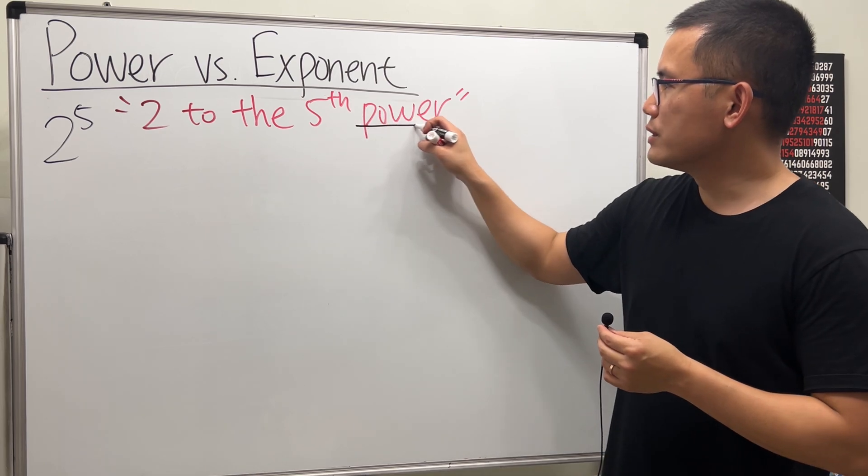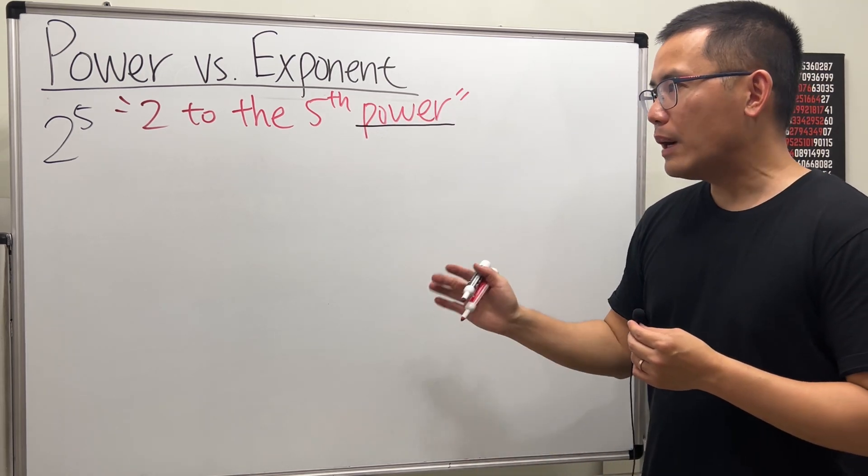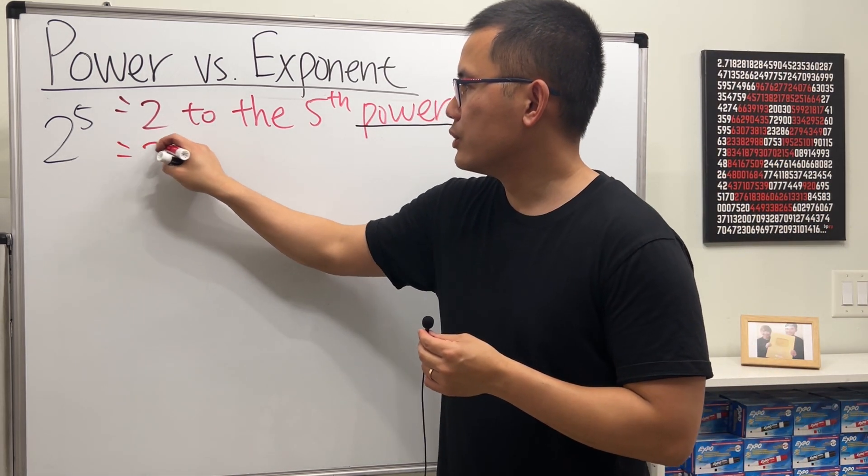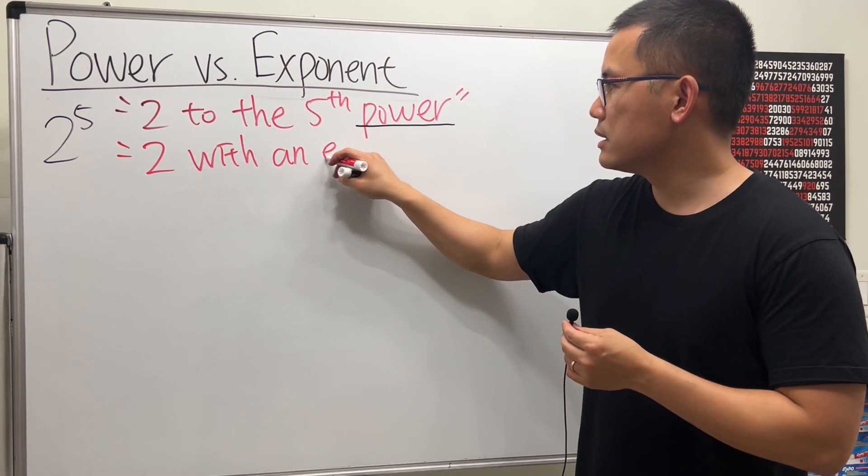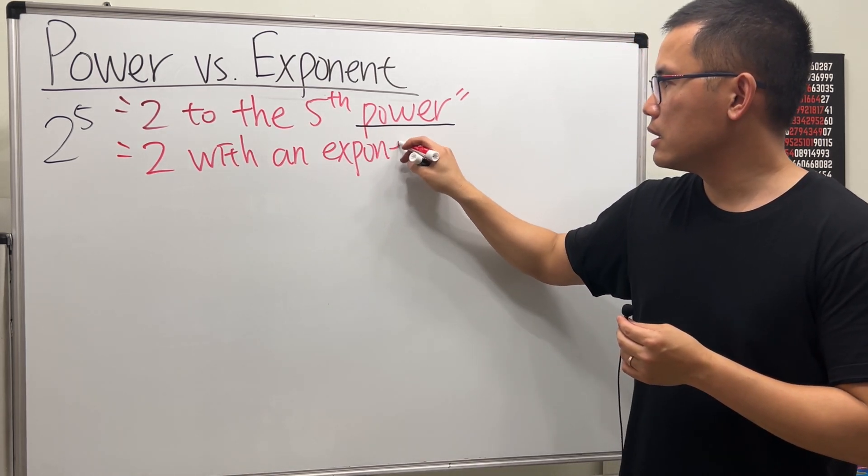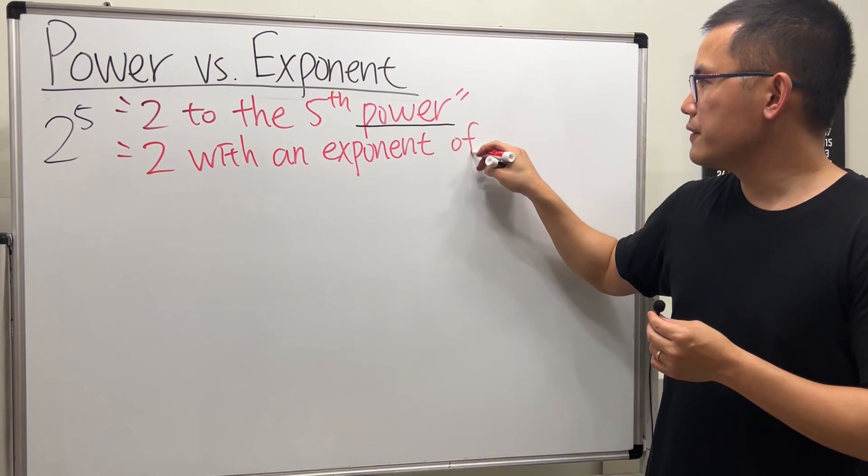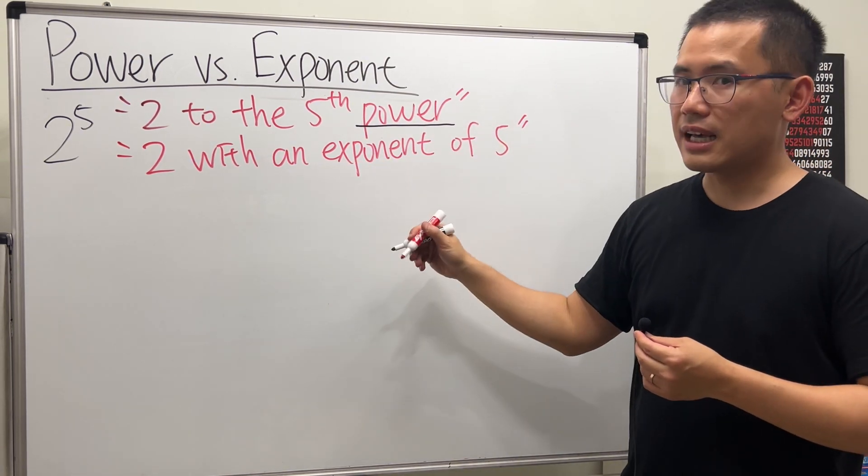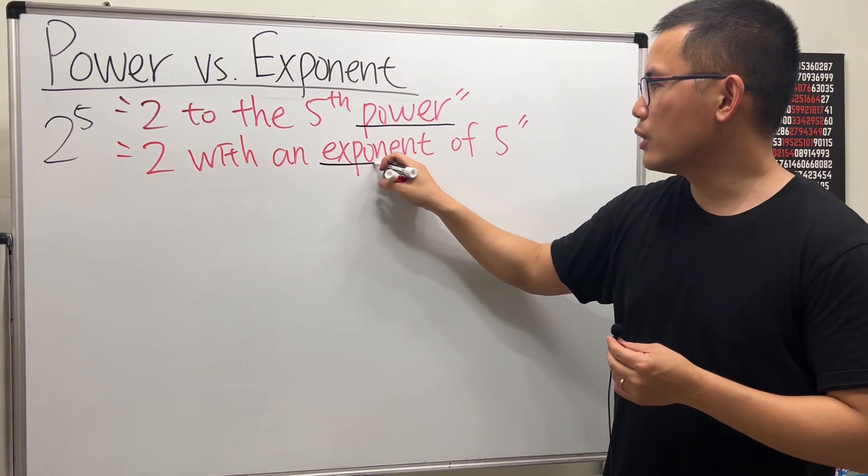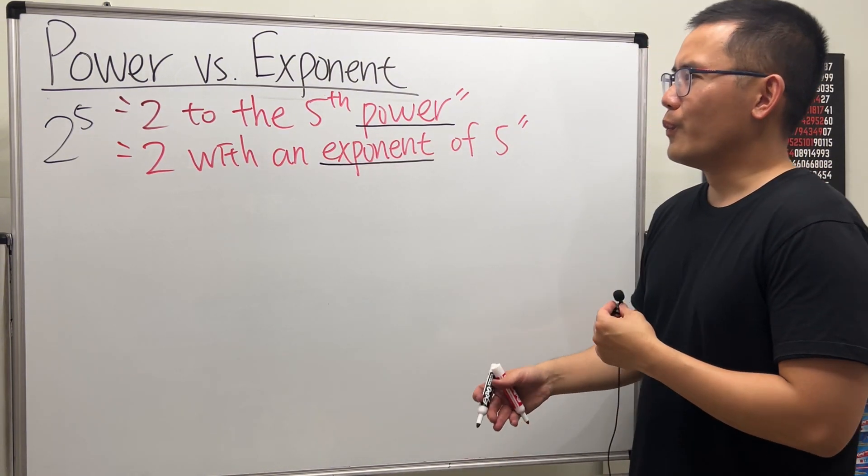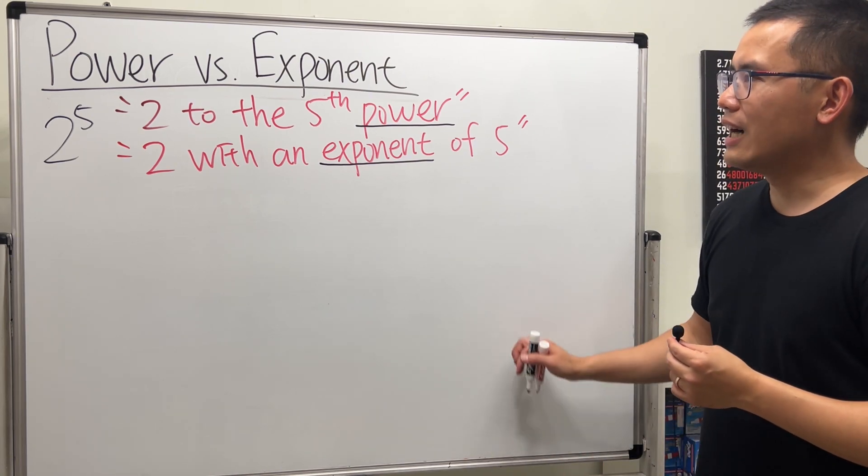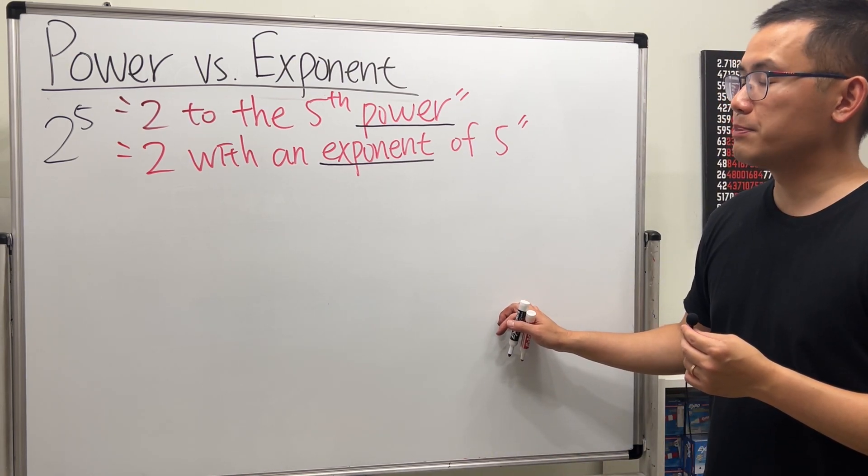And here, we are using the word power. But we can also say this as 2 with an exponent of 5. Although this right here is less common, but we can also use the term exponent. So, what's the big deal? Then why do we have the word power versus exponent?